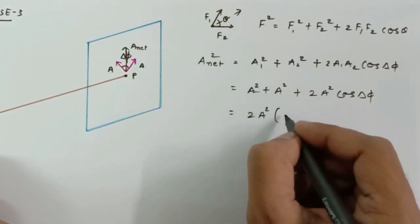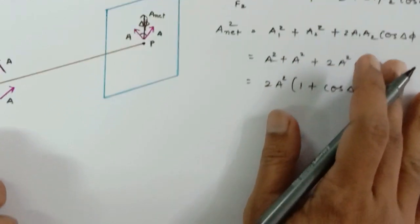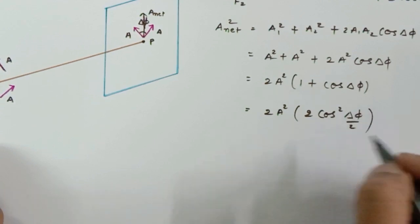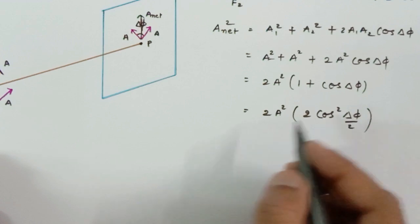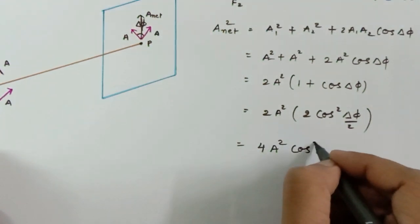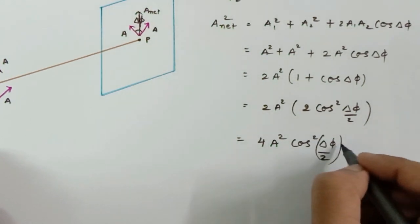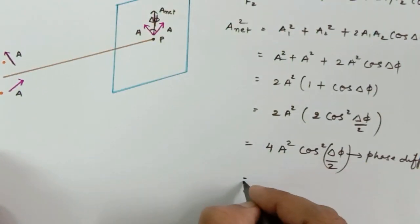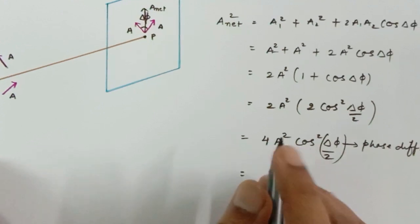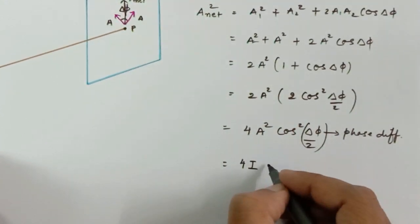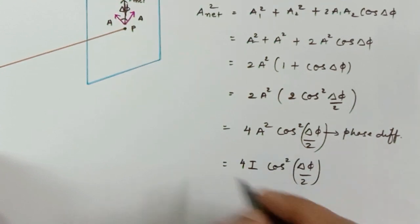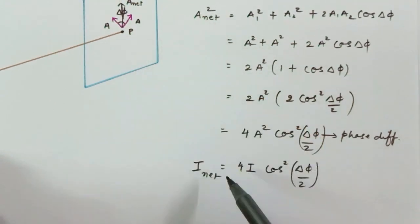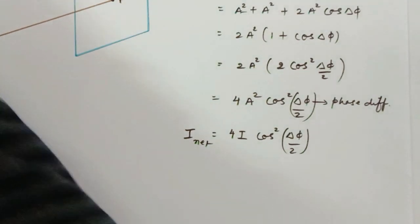So A_net² = 2a²(1 + cos Δφ). Using the identity 1 + cos θ = 2cos²(θ/2), this becomes 2a² · 2cos²(Δφ/2) = 4a²·cos²(Δφ/2). Since a² is the intensity of one wave, I_net = 4I·cos²(Δφ/2), where Δφ is the phase difference. This is our intensity equation — a very important formula!